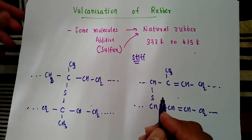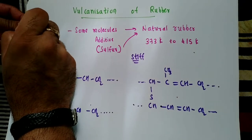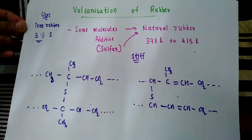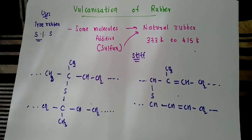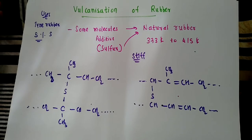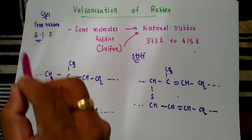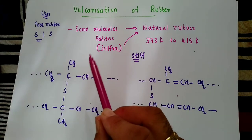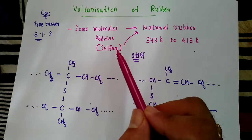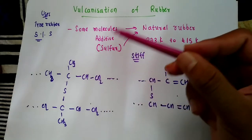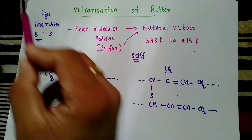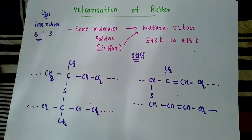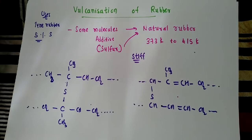One main use of vulcanization is in the manufacture of tire rubber, where 5% sulfur is added. The probable structure of vulcanized rubber shows cross-linking via sulfur. Vulcanization is done by adding sulfur or other additive molecules to prepare rubber that is stiffer than natural rubber. The main use is the preparation of tire rubber, requiring 5% sulfur.